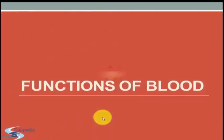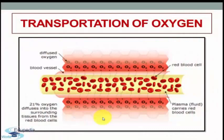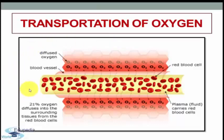Functions of blood. First of all, the transportation of oxygen is the major function of blood. As we all know, the blood carries oxygen from the lungs to the tissues with the help of hemoglobin, the pigment present in red blood cells. In this image you can see how the red blood cells transport oxygen to the tissues. So transportation of oxygen is one of the major functions of blood.